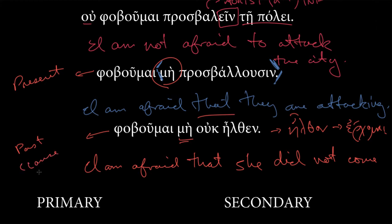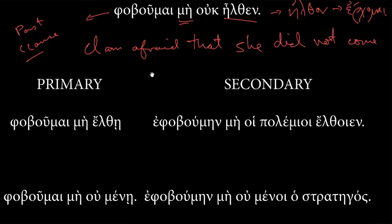Because what is this? This is ἐλθών. And what's the principal part, what's the first principal part of this verb? ἔρχομαι. ἔρχομαι. It's always a tricky one. ἔρχομαι. So, I'm afraid that she did not come, or he did not come. That's φοβοῦμαι μὴ οὐχ ἦλθεν. All right. So far, so good. Because here, this was a present fear.